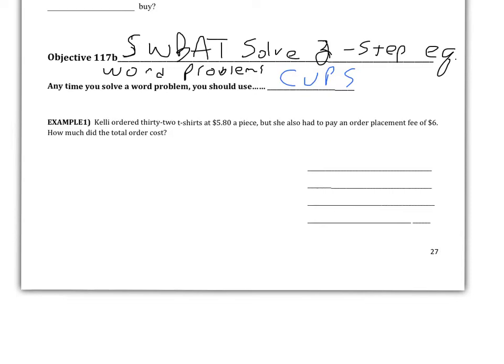Okay, so Kelly ordered 32 t-shirts. You're checking your CUPS with mine. Well, right when I read that, I just write out 32 at $5.80 apiece. But she also had to pay an order placement fee of $6. How much did the total order cost? That's what we're trying to find out, the total order cost.